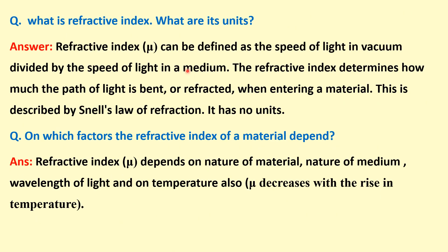What is refractive index and what are its units? Refractive index mu is defined as the speed of light in vacuum divided by the speed of light in a medium. It determines how much the path of light is bent or refracted when entering a medium, as described by Snell's law of refraction. Refractive index has no units.